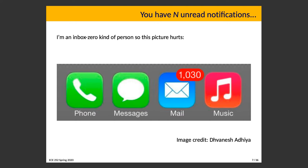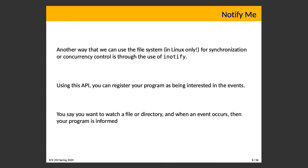The next thing we want to talk about is iNotify. It's another way to use the file system in Linux only — not standards-compliant, so you won't find it in other Unix-like operating systems. It's a way we can use the file system for synchronization or concurrency control, in that you can wait for certain things to happen and be notified when that occurs. Using the API, you register your program as being interested in an event, and when that event happens, you get notified.